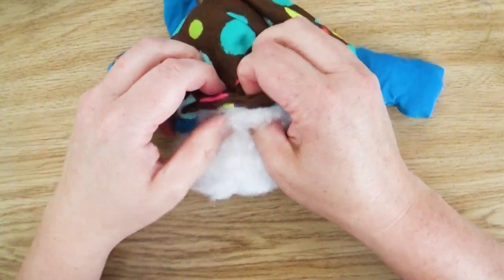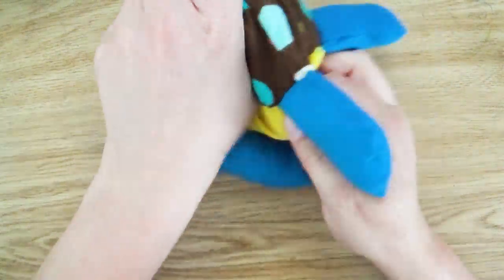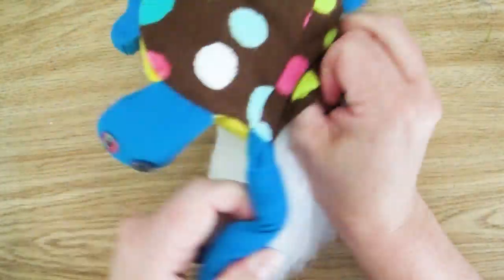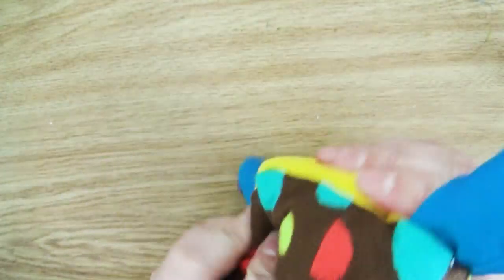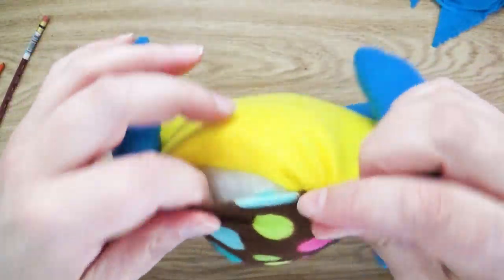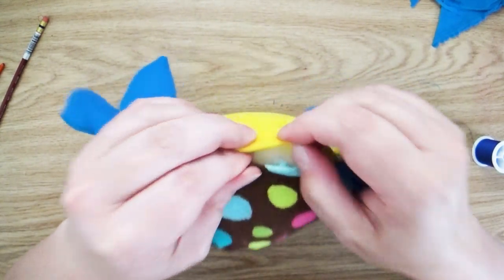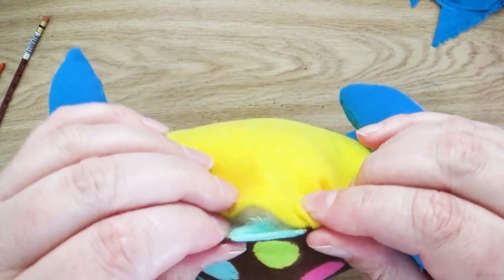I grab some batting and I stuff my turtle and then I want to sew up the little tiny opening. There are so many different kinds of stitches that you can use here. There's one called the ladder stitch, which if done correctly, you don't even see your stitch marks, which is amazing.